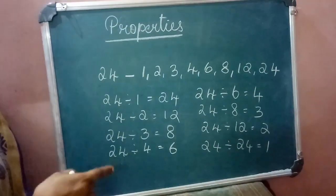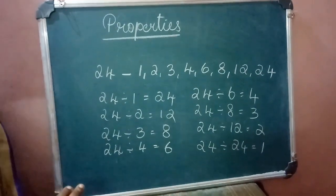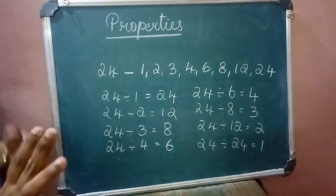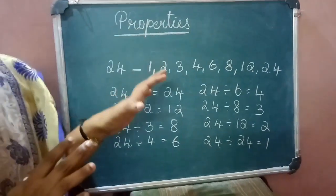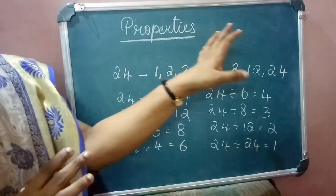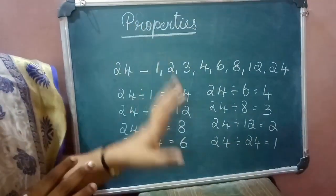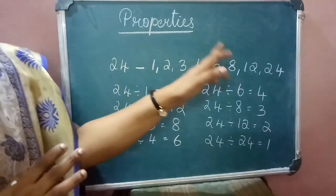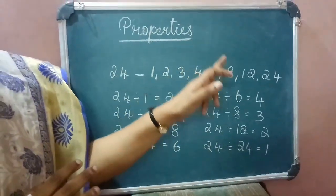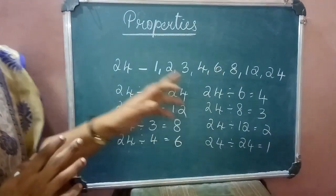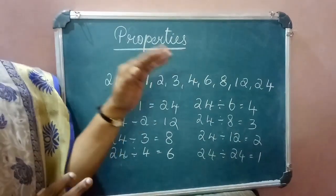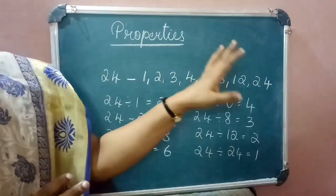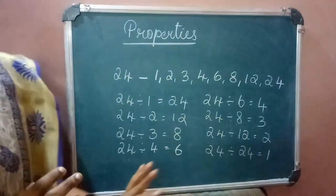So there are five properties of factors: 1 is a factor of every number; every number is a factor of itself; the number of factors is finite (countable); all factors are less than or equal to that number; and every factor of a number divides it exactly with no remainder.